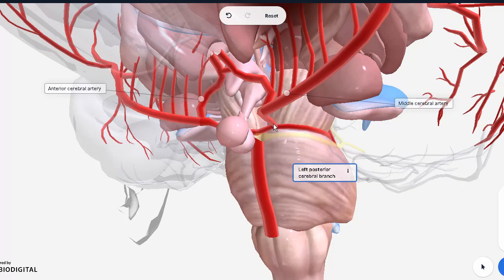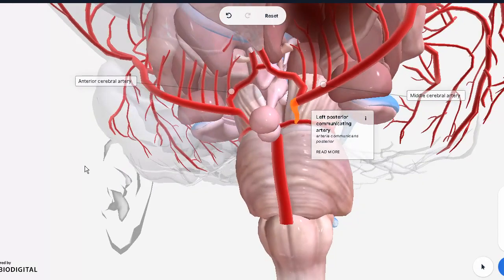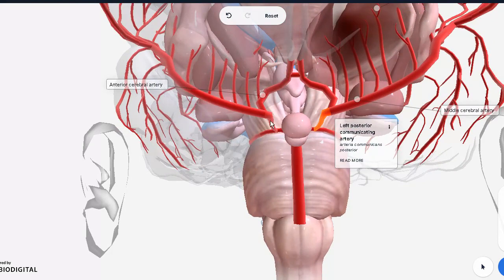And this will then communicate with the middle and anterior cerebral artery via this communicating artery. This right here, this thick artery is the middle cerebral artery. And the one in front is your anterior cerebral. The anterior cerebral is communicating with each other via the anterior communicating. And this is giving your characteristic circle of Willis.